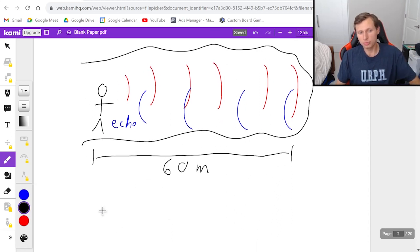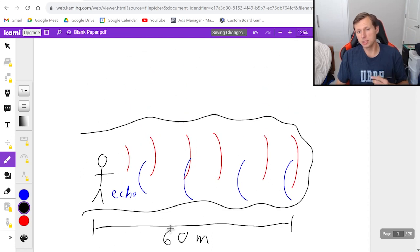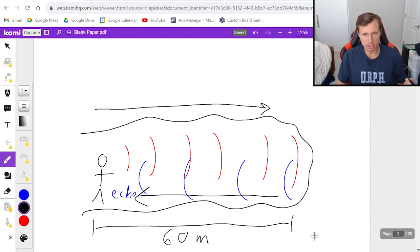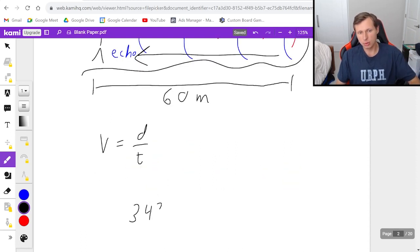So to do that we're going to use velocity equals distance over time again, but the secret to this problem is whenever you have an echo you need to double the distance. The reason why is it's going 60 meters to the right, and then it's coming 60 meters back to the left for a total of 120 meters. So in other words, velocity 343 equals the distance, which we just said was 120, divided by time.